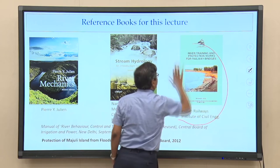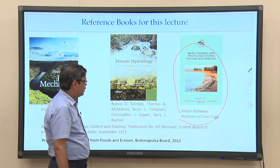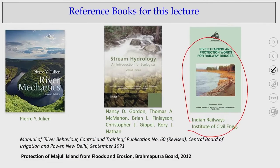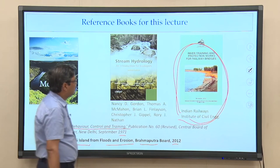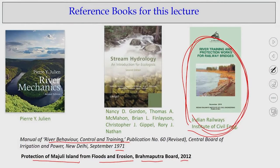We are following mostly the Indian conditions. River bank protection works have been done extensively for many rivers like Ganga, Brahmaputra, Brahmani, and Mini river. We have successfully completed river bank protections and have a lot of experience on how to protect the river bank, understand river behavior and control. Training work from 1971 and a 2012 report covers protections of Majuli island, part of the Brahmaputra rivers, dealing with flood and erosions. We are not going into detailed design components — you can follow Indian standard codes or the book published in 2016.